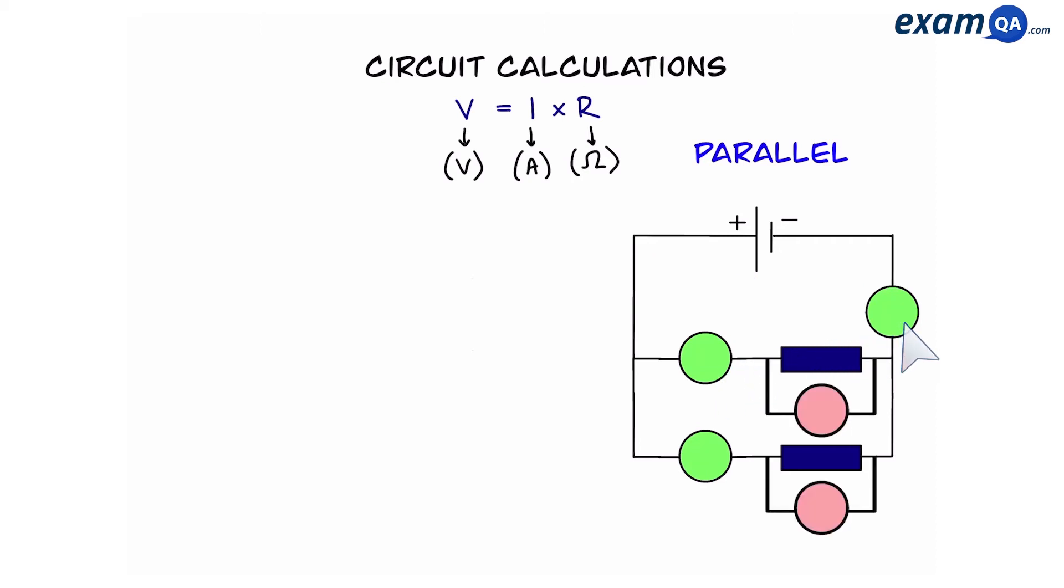Now let's look at voltage. So we can see that each component has its own voltmeter like before. However the rule is different with voltage. Voltage is the same everywhere. So if the total voltage was 10 volts that means each component also has 10 volts. If it was 15 volts again each component will have 15 volts. What about if it was 3 volts? You guessed it, 3 volts for each.